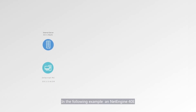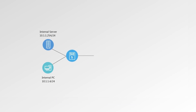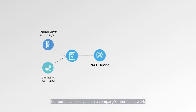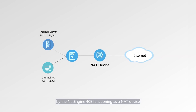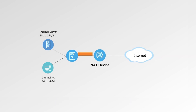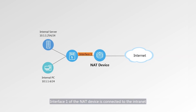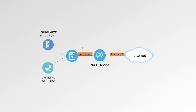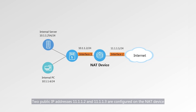In the following example, a NetEngine 40E is used to describe the networking. Computers and servers on a company's internal network need to be connected to the internet using the NAT function provided by the NetEngine 40E functioning as a NAT device. Interface 1 of the NAT device is connected to the internet, and interface 2 is connected to the intranet. Two public IP addresses, 11.1.1.2 and 11.1.1.3, are configured on the NAT device.